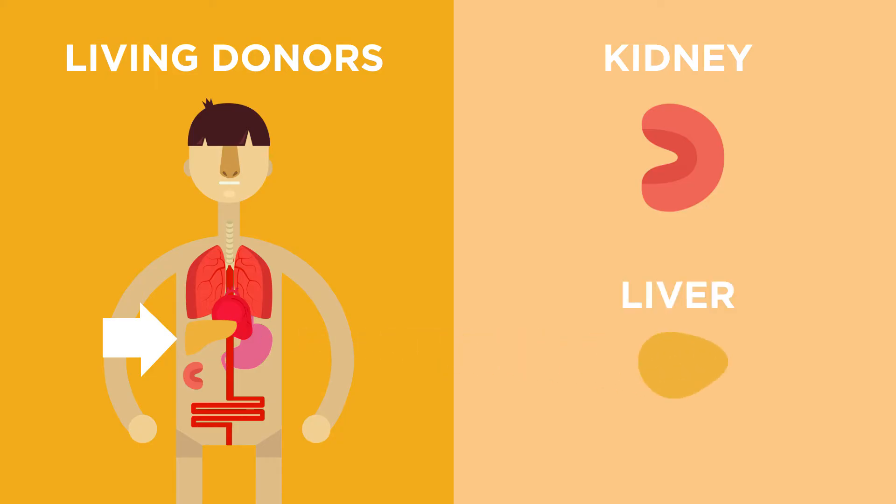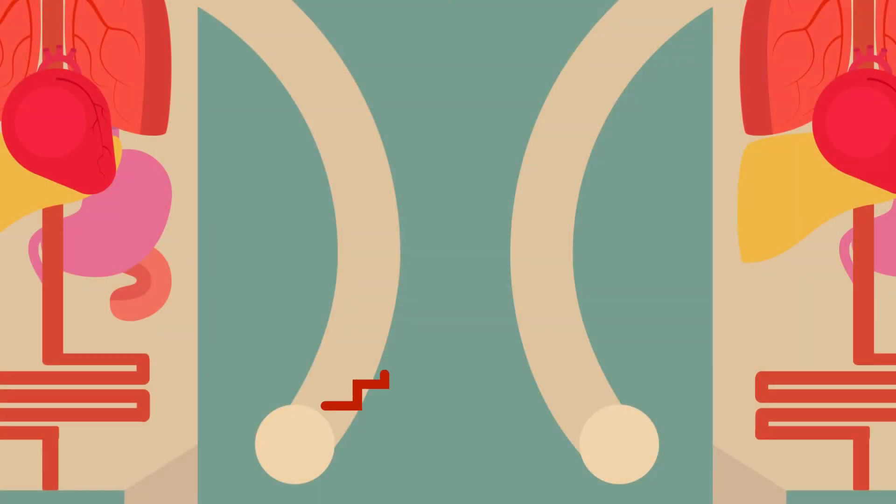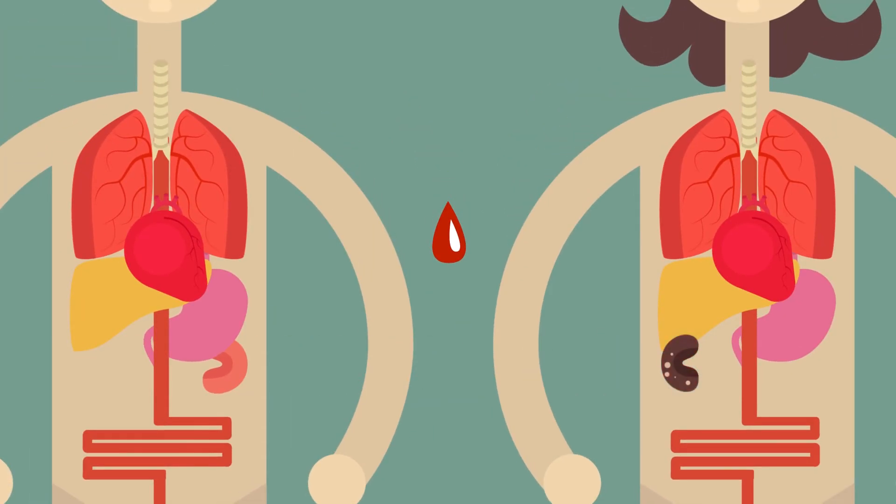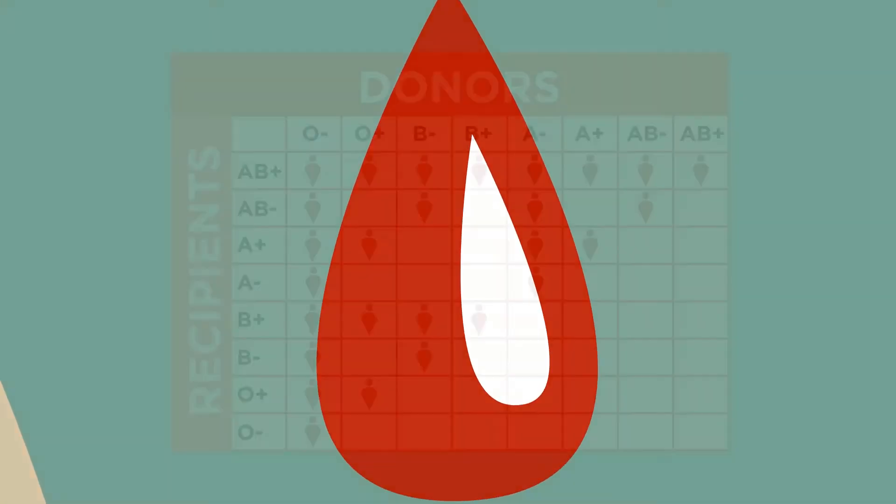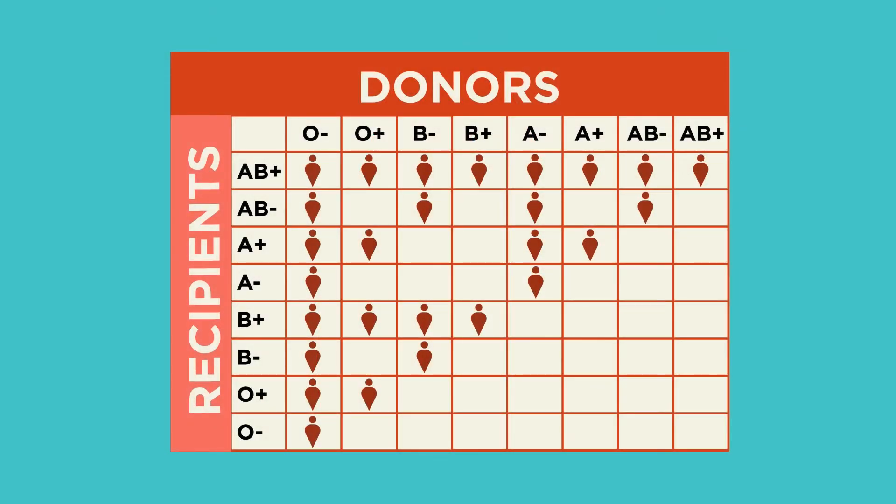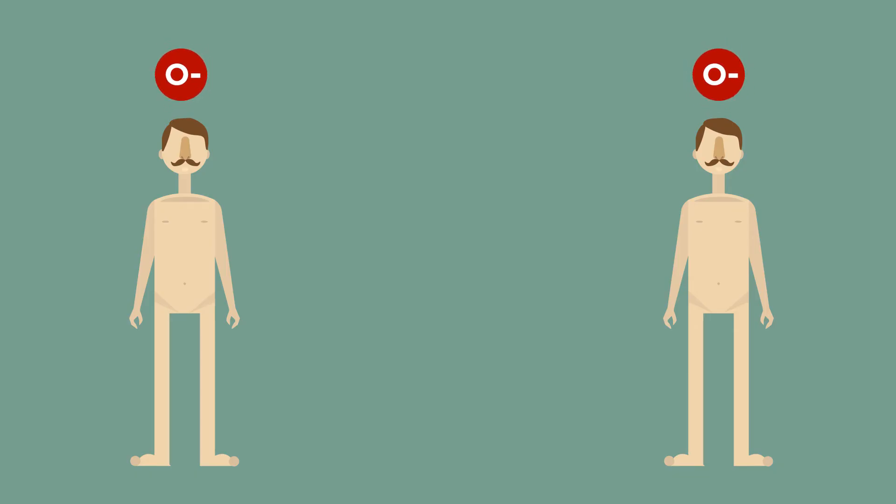The blood type of the donor must be compatible for the blood type of the receiver so that the organ is not rejected by the receiver's body. For example, people with O negative blood group can donate to anyone, the universal donors, but they can only receive from other O negative blood.